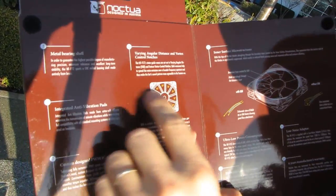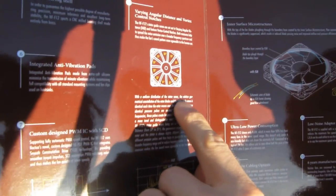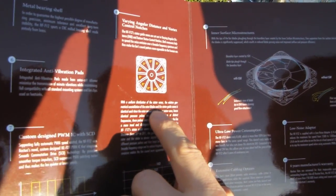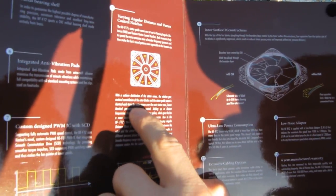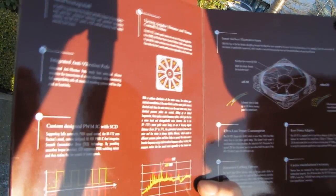Varying angular distance and vortex control notches. With the uniform distribution of the stator vanes, the relative geometrical constellation of the rotor blades and stator guide vanes is identical each time the rotor moves over the next stator vane.